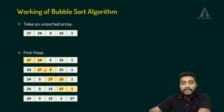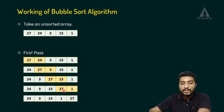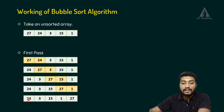Now, 27 is compared to 3 — since 3 is smaller, we swap 3 and 27. Then 27 is compared to 15, and 15 will come before 27. Then 27 is compared to 1, and 1 will come before 27. So at the end of the first pass, the array result is: 24, 3, 15, 1, 27 — with 27 bubbled to the last position.